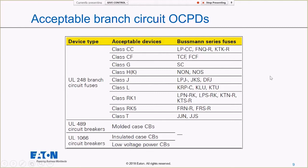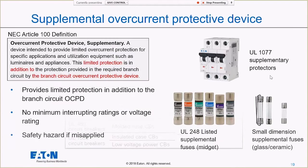There are really two types of overcurrent protective devices: a branch circuit overcurrent protective device that can be used anywhere, and a supplementary overcurrent protective device that provides limited protection and should only be used in addition to branch circuit overcurrent protection — really limiting these to control circuits only. That's my UL1077 supplemental protectors: midget fuses and glass fuses.